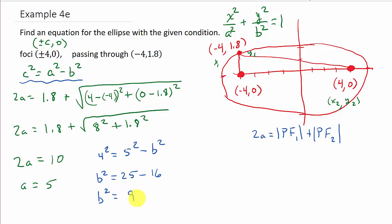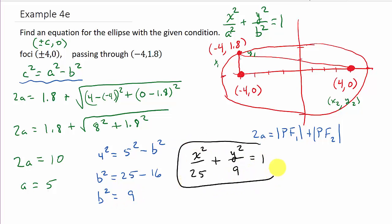Now I have both values, so the final answer is x squared over 25 plus y squared over 9 equals 1. I hope that video helped — check out my other videos, give me a like, share and subscribe, and thanks for watching.